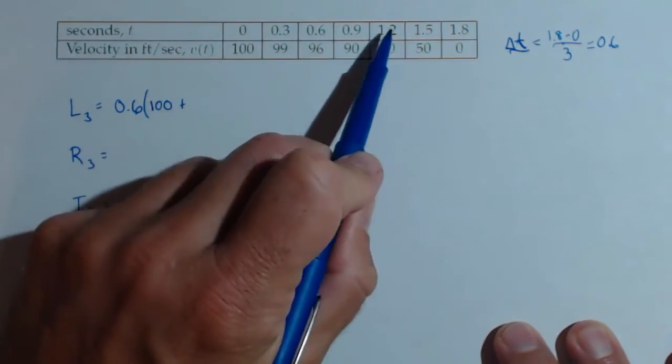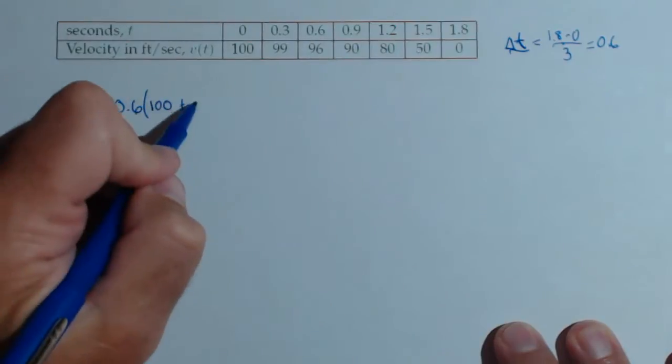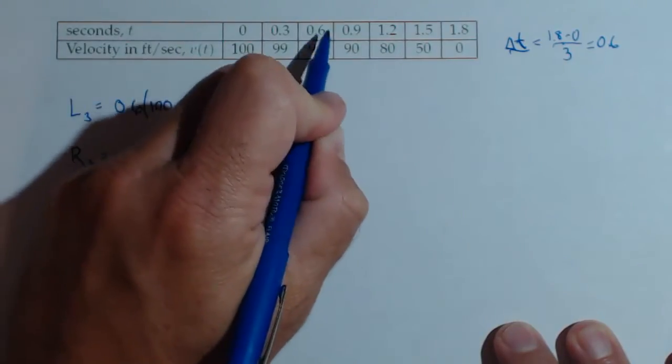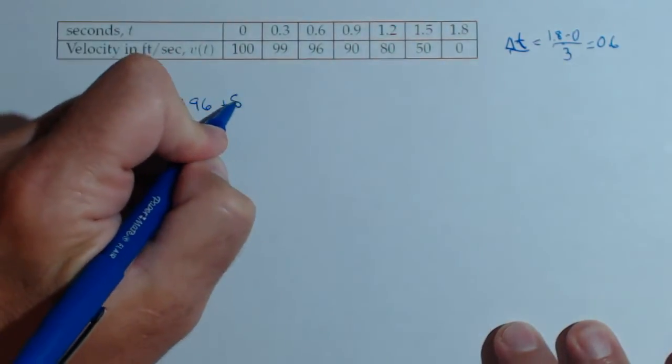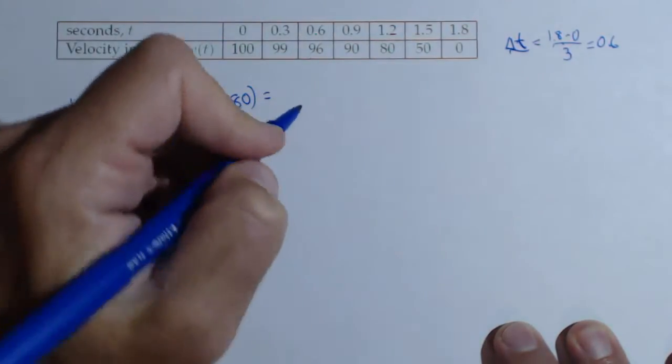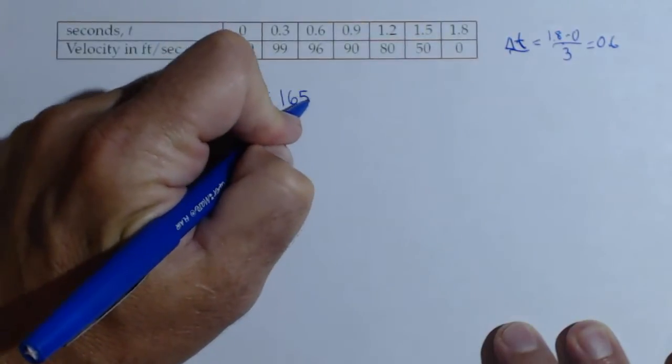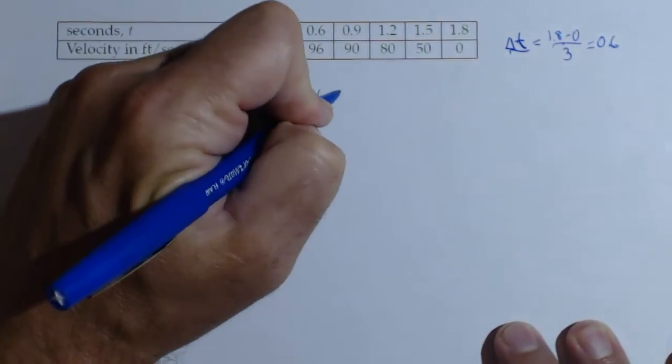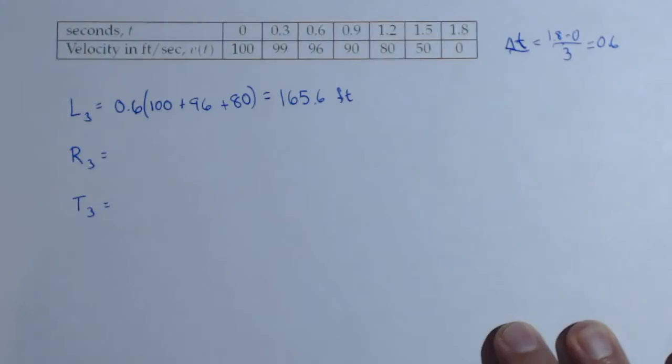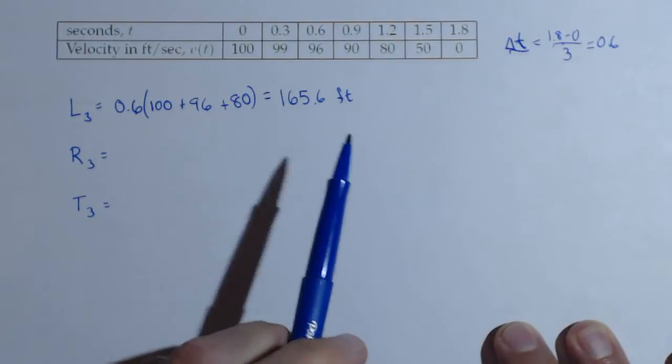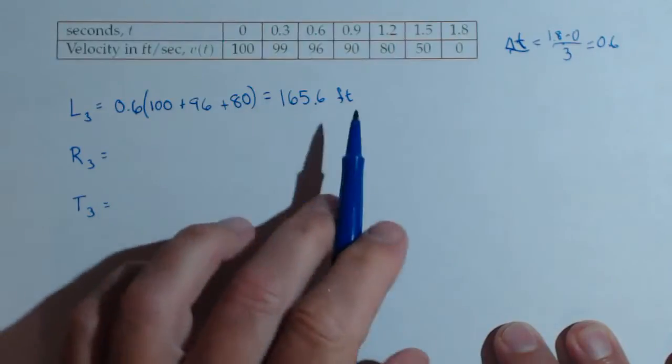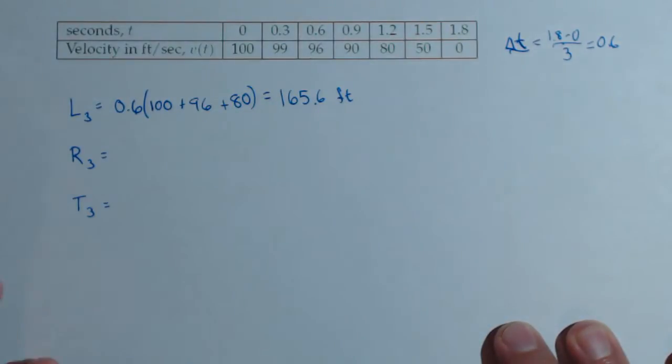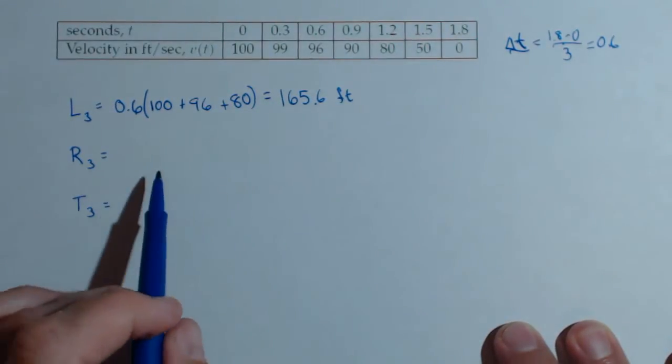My second interval is 0.6 to 1.2, I'm going to use 96, and then my next interval is 1.2 to 1.8, I'm going to use 80. I've already calculated these to save some time, so that gives you 165.6 feet, since we were in feet per second. That's going to be the absolute maximum distance this object could have traveled during these 1.8 seconds. Not bad, but we'll see if we can do a little better.